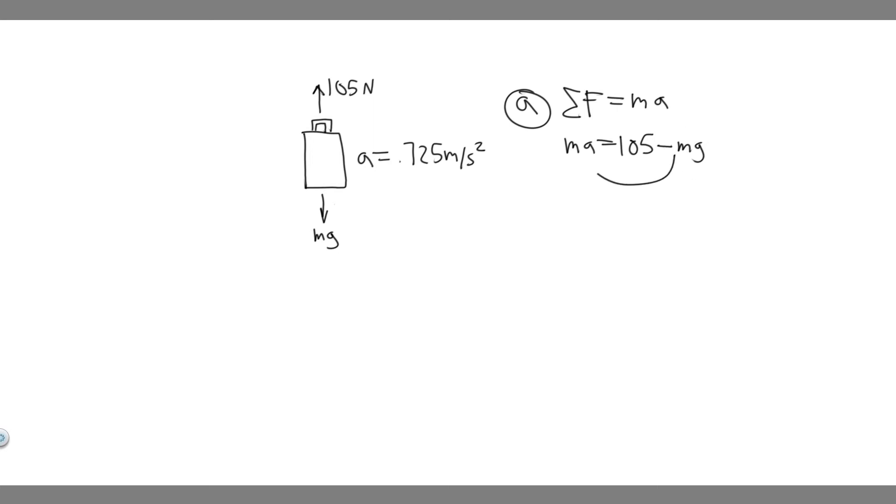So I'm going to move this to the other side. You would get 105 equals mg plus ma, and then I'm going to factor out the m, so just take an m out of both terms, and you'll get m, or 105 equals m times g plus a.